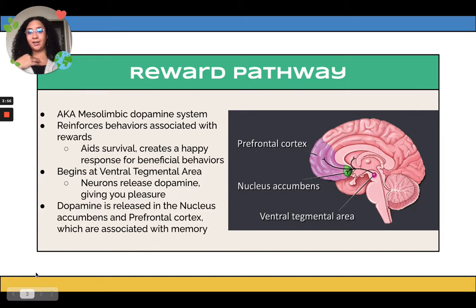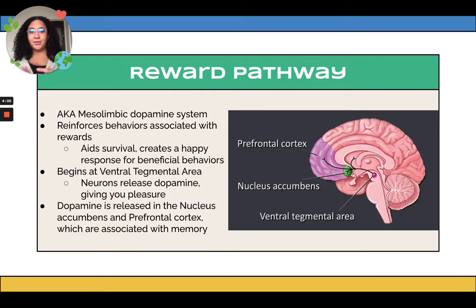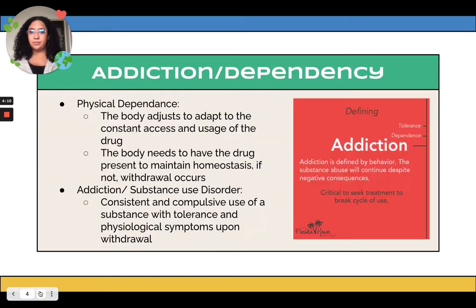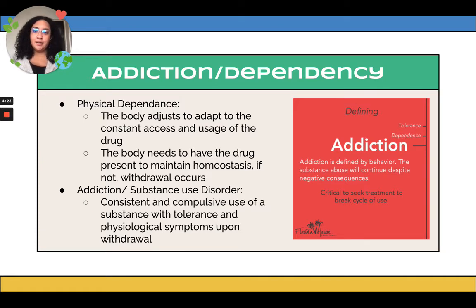In terms of alcohol and drugs, they cause dopamine to be released, which triggers the reward pathway. Dependence is when the body adjusts and adapts to the constant access and use of a drug. Your body adapts to the constant use and begins to need the drug present to maintain homeostasis, with dopamine levels adjusting accordingly.